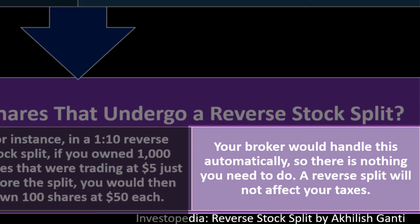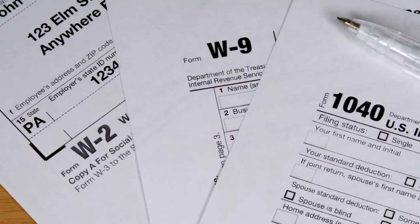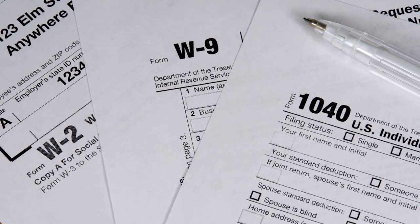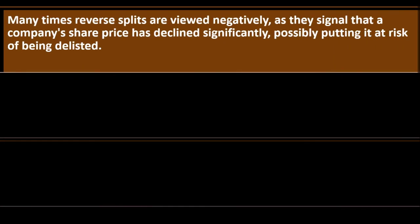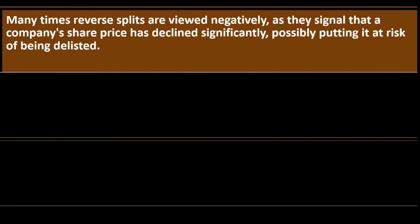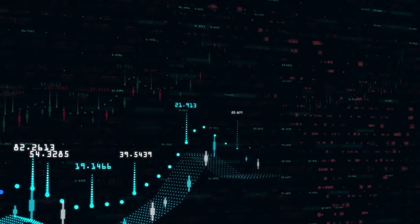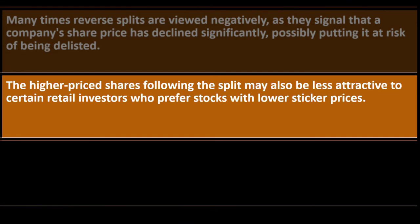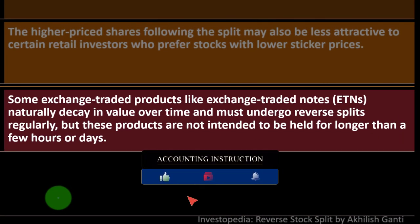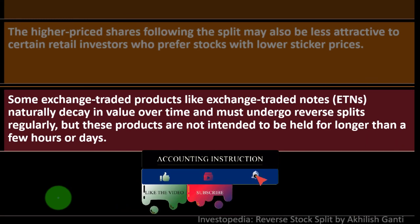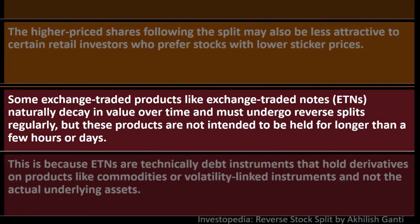A reverse split will not affect your taxes — it is not a taxable event. A taxable event usually happens when you sell the stock, realizing a gain or loss, and no selling action has taken place here. Is a reverse split good or bad? Many times reverse splits are viewed negatively as they signal that a company's share price has declined significantly, possibly putting it at risk of being delisted. The higher-priced shares following the split may also be less attractive to certain retail investors who prefer lower-priced stocks. Some exchange traded products like exchange traded notes (ETNs) naturally decay in value over time and must undergo reverse splits regularly, but these products are not intended to be held for longer than a few hours or days.